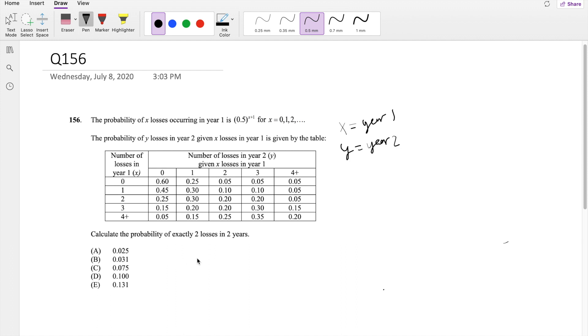The only way you can get two losses is if in year 1 you had 0 and year 2 you had 2, or in year 1 you had 1 and year 2 you had 1, or lastly, in year 1 you had 2 and in year 2 you had 0. So that's the only three combinations to get exactly two losses.